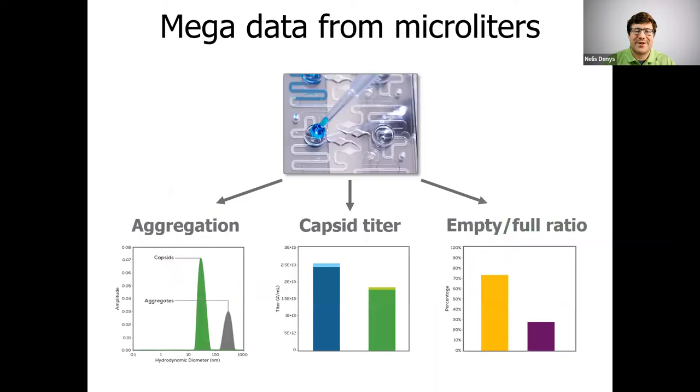So, from only two microliters, Stunner combines UV-VIS, DLS, and SLS data to tell the whole story about your AAV, delivering mountains of data on your sample about aggregation, AAV full and empty capsid titers, and an empty full ratio.